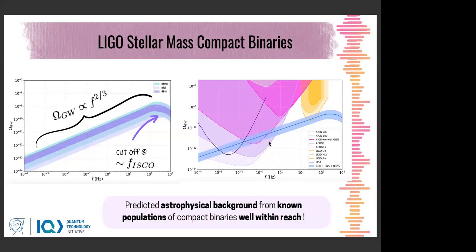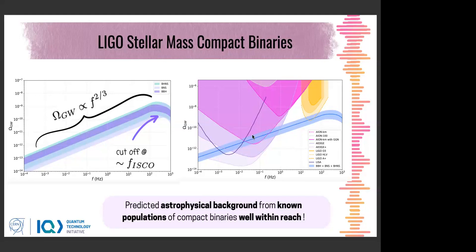The AI-10 at 10 meters is not really useful for gravitational wave searches, but AION-km and LISA will clearly be within reach of this signal. Importantly, this astrophysical background has not yet been accessible to LIGO, but will certainly be detectable at atom interferometers and LISA in the future.